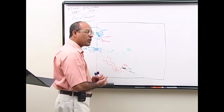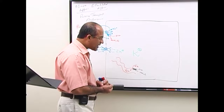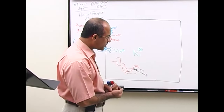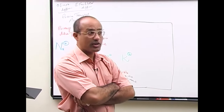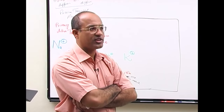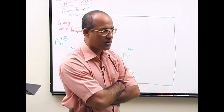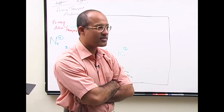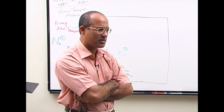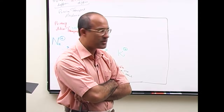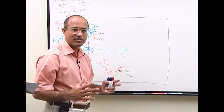In secondary active transport, substances are transported across the membrane against the concentration gradient, but energy is not utilized directly at that point—there is indirect utilization of energy.